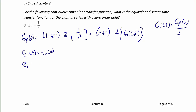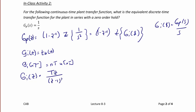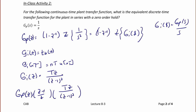In discrete time, GI(nT) = nT · u(nT), and the Z-transform GI(z) = Tz/(z−1)². Finally, GP(z) = (z−1)/z · Tz/(z−1)², so GP(z) = T/(z−1).